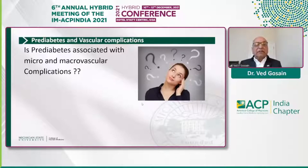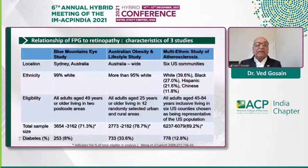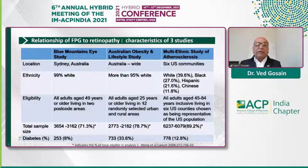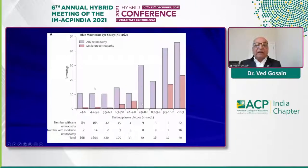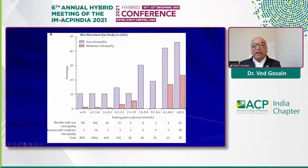The question is, is pre-diabetes associated with micro and macrovascular complications? And the answer is yes. These are three studies that have looked at the relationship of fasting plasma glucose to retinopathy, with fairly large numbers — 3,000, 2,000, and 6,000 in a US study, and two Australian studies. If you look at the prevalence of retinopathy with plasma glucose below 7 mmol/L — which is where we make a diagnosis of diabetes — you already have some degree of retinopathy. And as glucose levels go up, so does retinopathy.